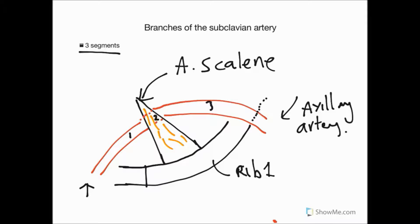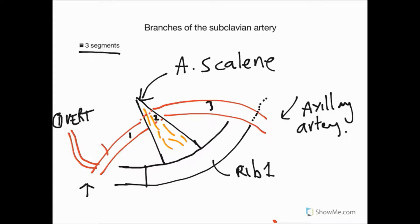That defines the extent of our subclavian artery. Pretty much all of its branches come off the first segment. The first branch comes off here and that's going to be the vertebral artery, which I'm sure you've heard of before. That's number one — the vertebral artery — obviously not supplying the breast.